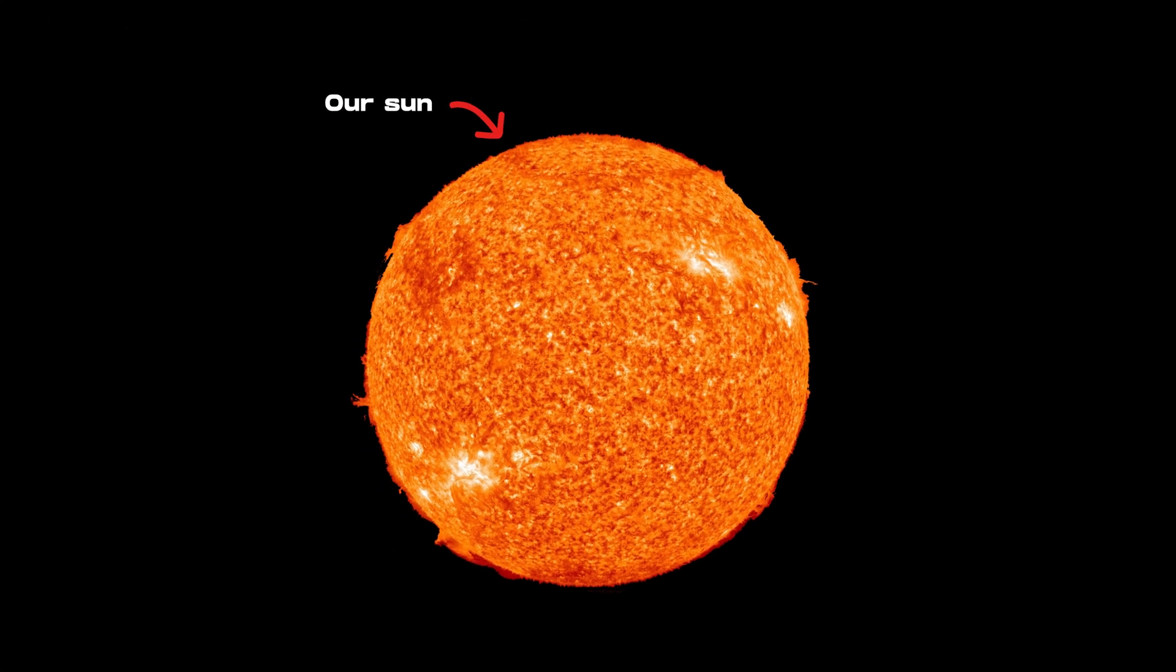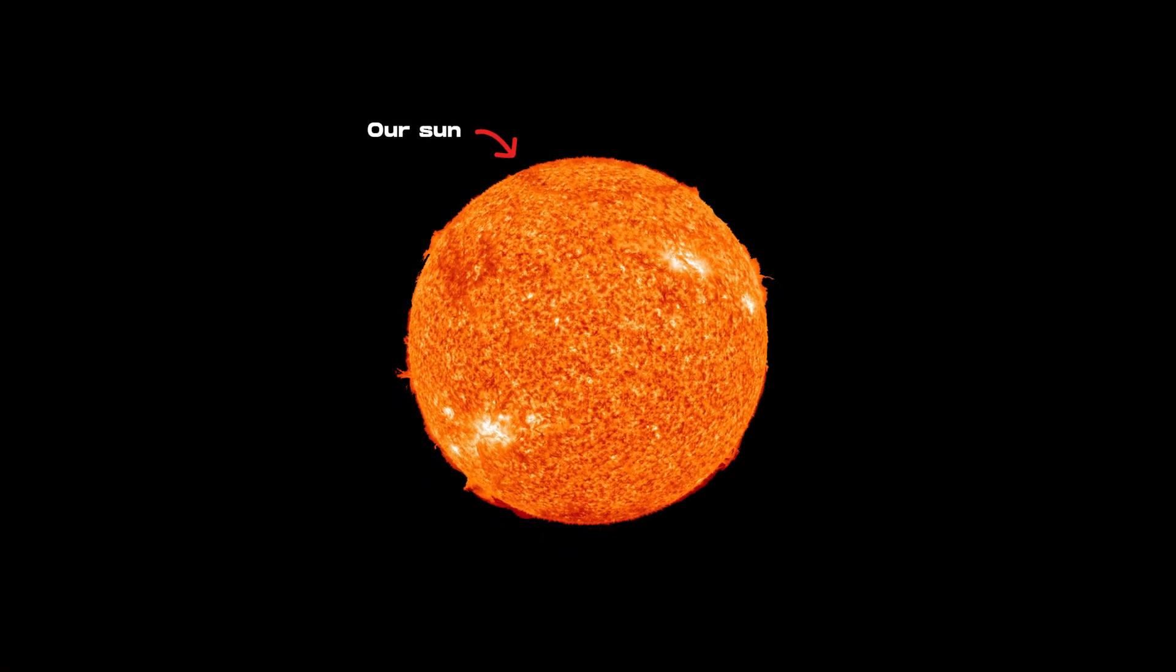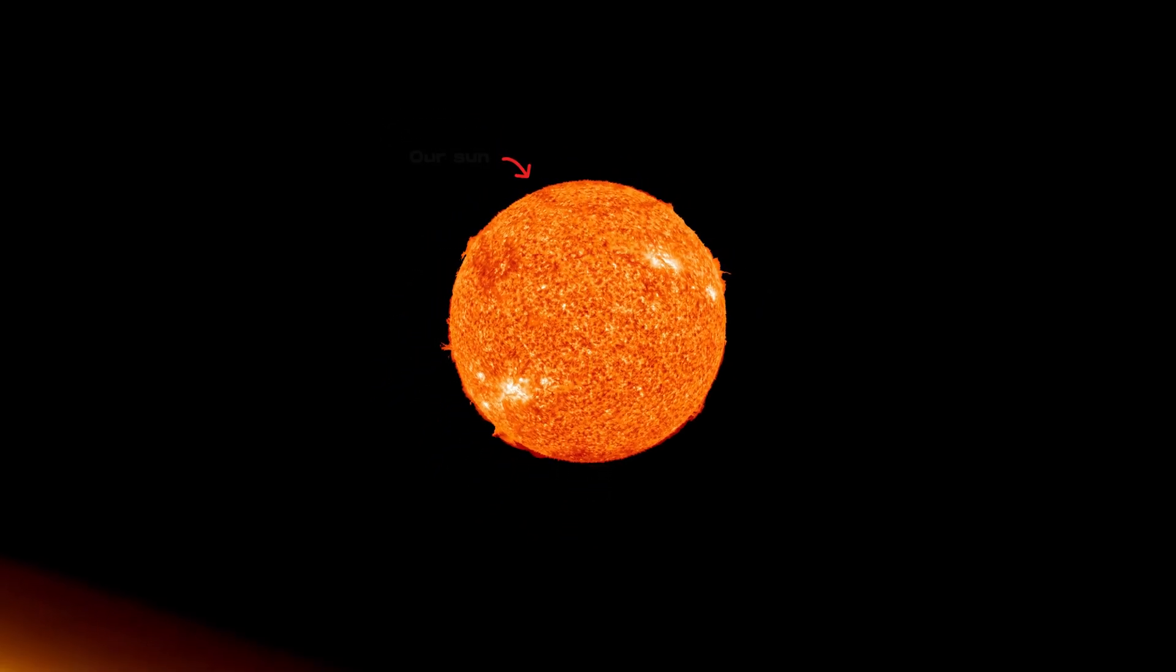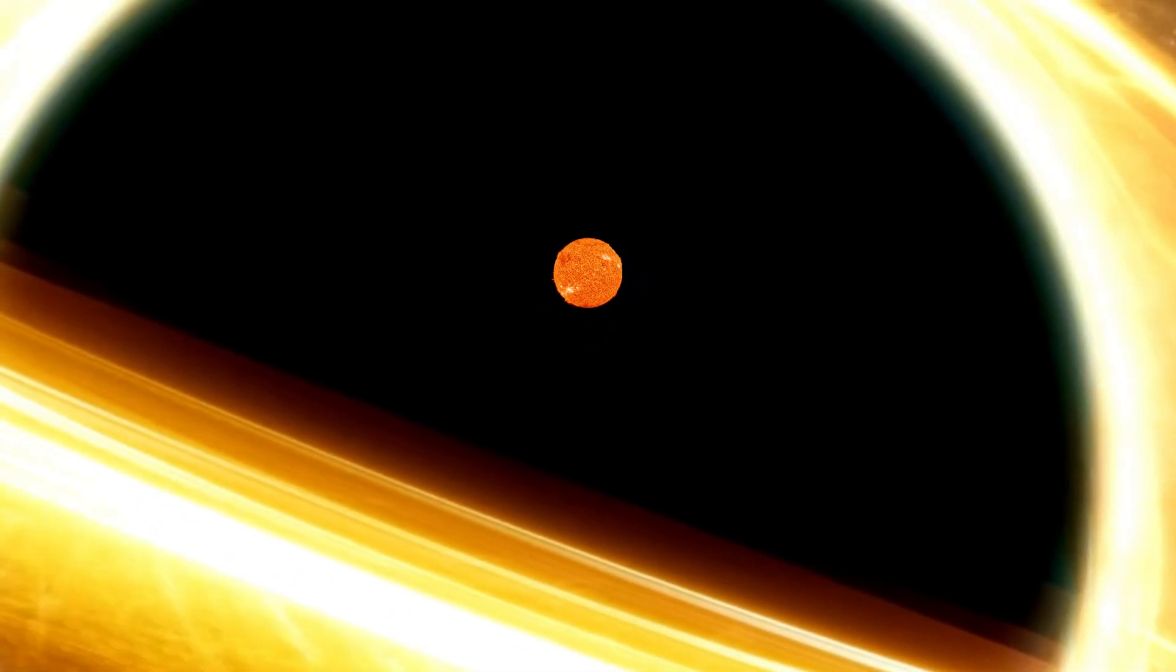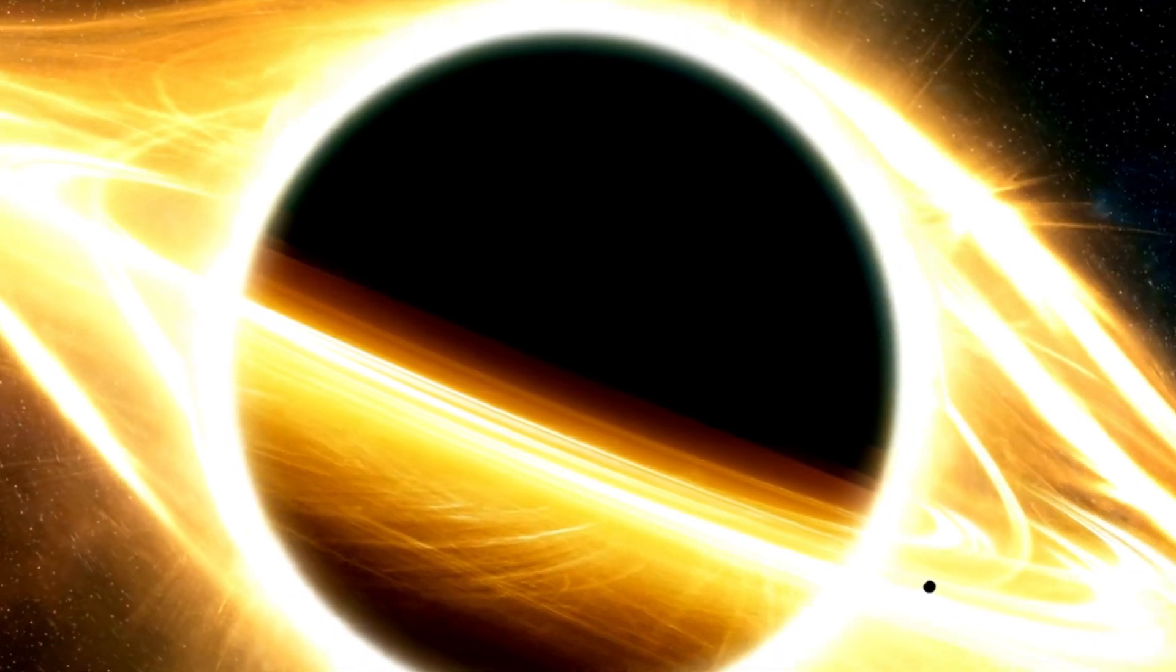Black holes come in various sizes, classified by their mass. Stellar-mass black holes are several times the mass of our Sun, while supermassive black holes can be millions to billions of times more massive.